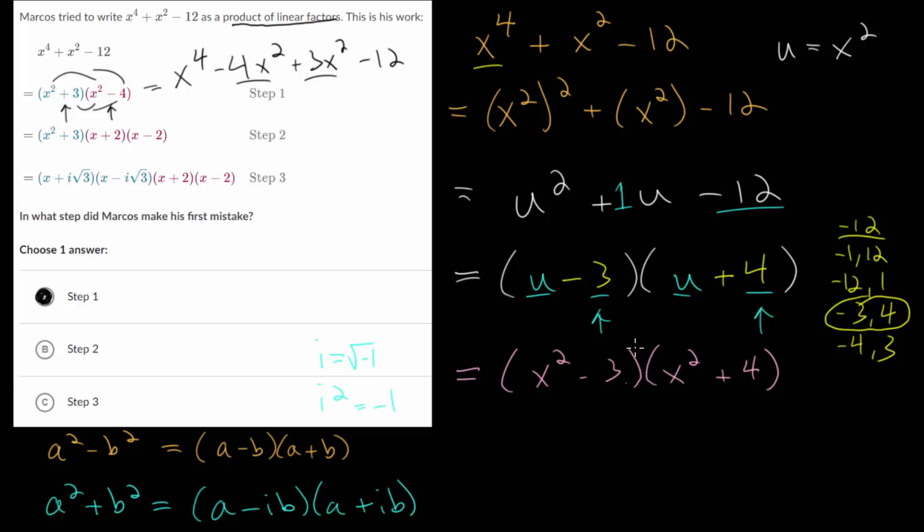Since three is not a perfect square, we could rewrite this as x squared minus the square root of three squared, since when we simplify this, square root and square cancel and we get minus three. Over here we have x squared plus two squared.